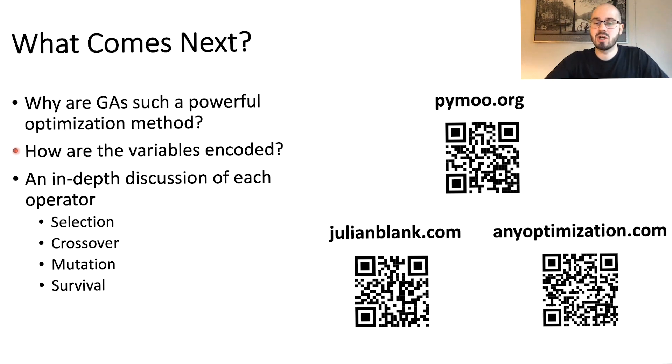How are variables encoded? Because the encoding is where the evolutionary operators, the crossover and the mutation, actually work on. And thirdly, each of these operators does have a specific purpose and they can be redesigned, they can be customized to fit exactly your optimization problem needs. So it's really worth thinking about each of these four different operators and learning what is their meaning and how does the algorithm change if I redesign them.